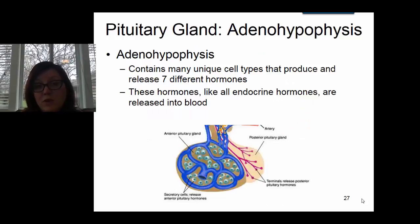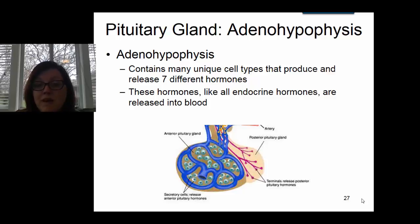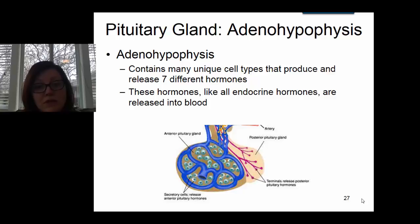The relationship between the hypothalamus and the adenohypophysis is a little bit different. The adenohypophysis is more glandular than it is nervous tissue. The adenohypophysis contains many unique cell types that produce and release seven different hormones, and like all endocrine hormones, these hormones are going to be released into the blood.